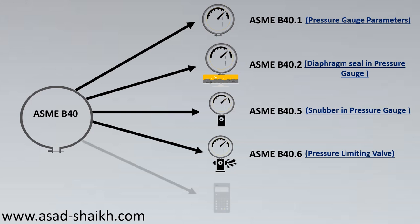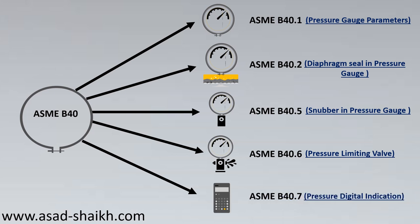Finally, as everything is getting modernized, pressure gauges are also going digital. ASME B40.7 deals with pressure gauges that indicate pressure on a digital scale.